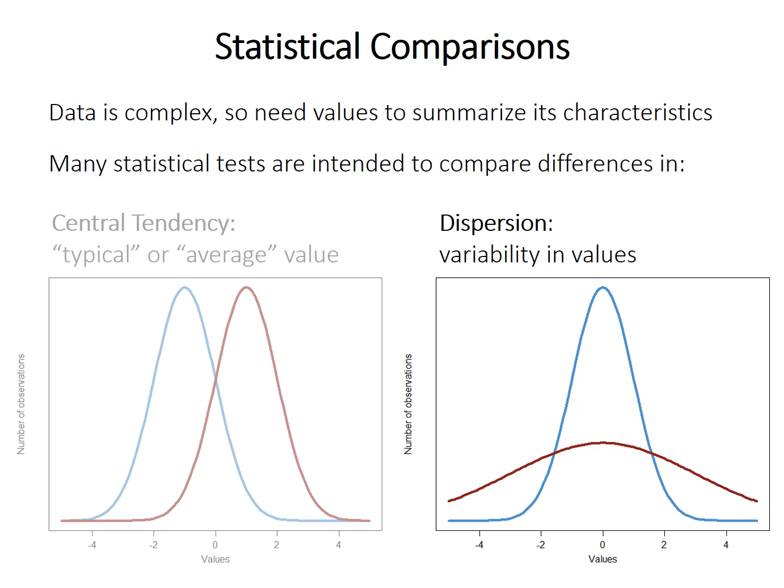Statistical samples contain many individual observations or measurements, and so it's important to have some kind of value that can summarize the characteristics of that complex data. You learned in the previous video about measures of central tendency, the average. This video introduces measures of dispersion, or variability, in the values of a data or sample. We'll move on to statistical hypothesis testing of those measures later on.